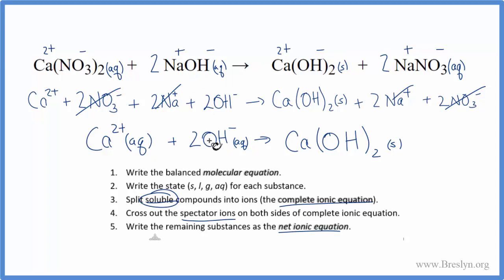The reason we cross those spectator ions out is they're really not doing anything. We're interested in change. And we have two nitrates here, two here. They didn't change. Same with the sodium here and here. They've not changed. What has changed, the calcium has bonded to the hydroxides to form calcium hydroxide. That's a new substance. This is really why we write our net ionic equations.